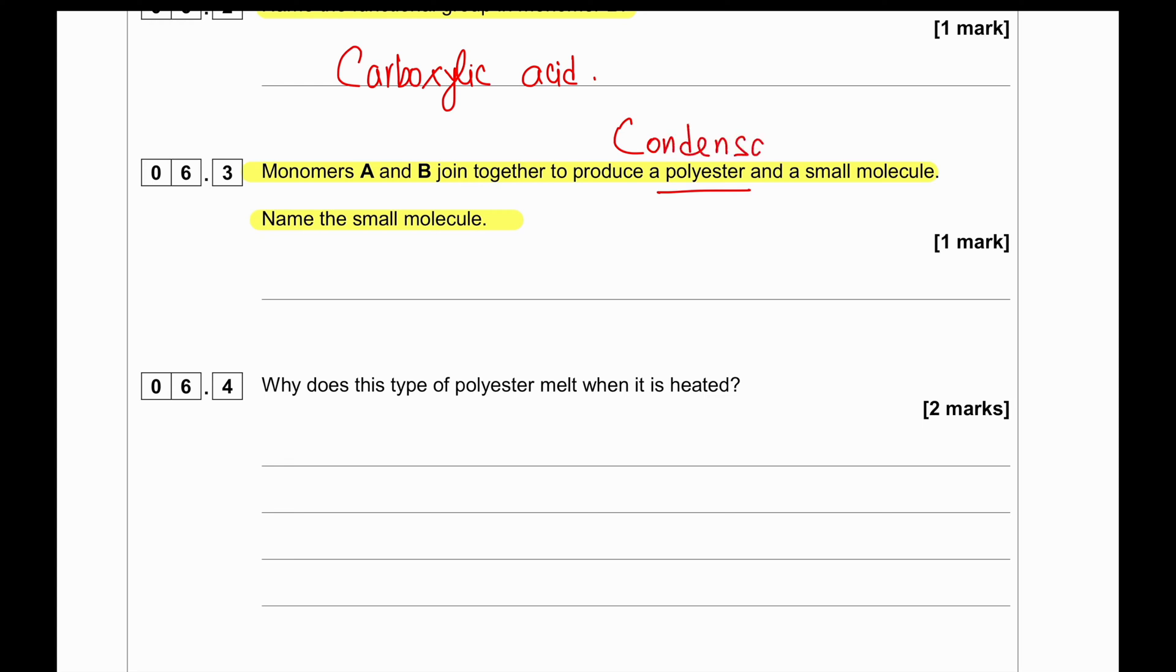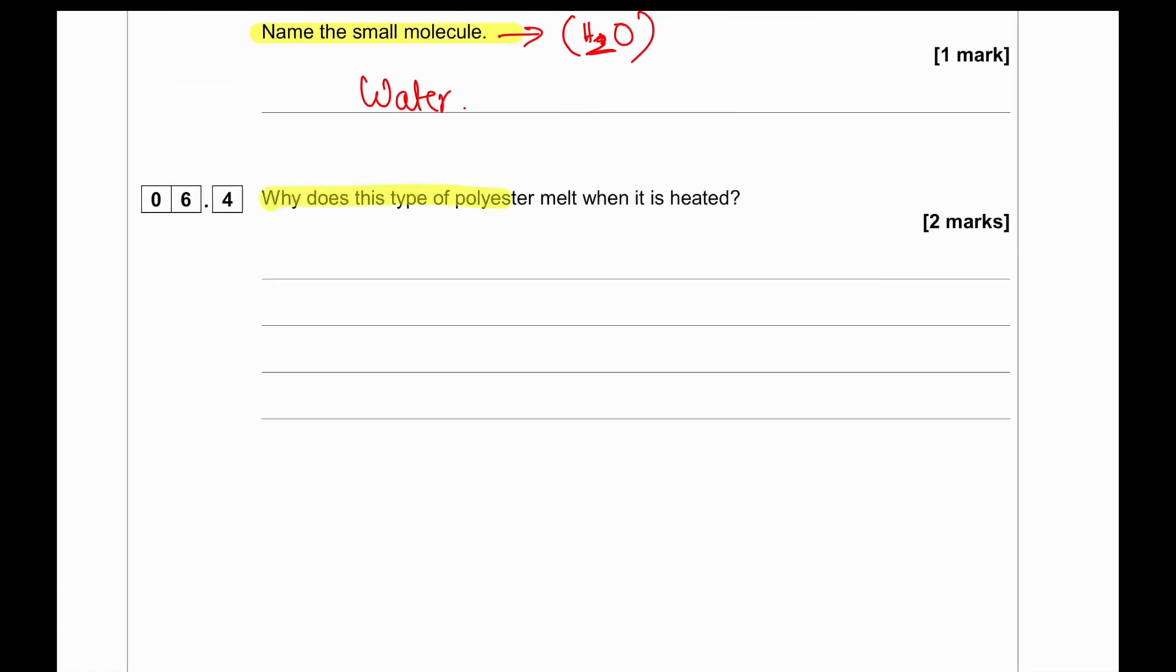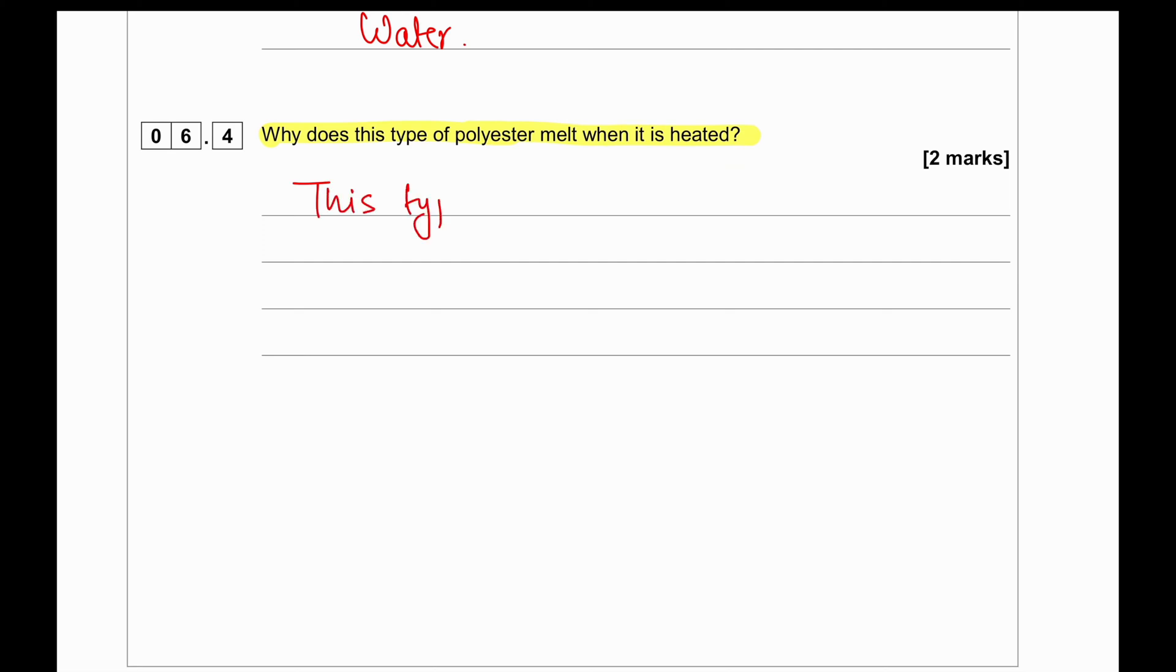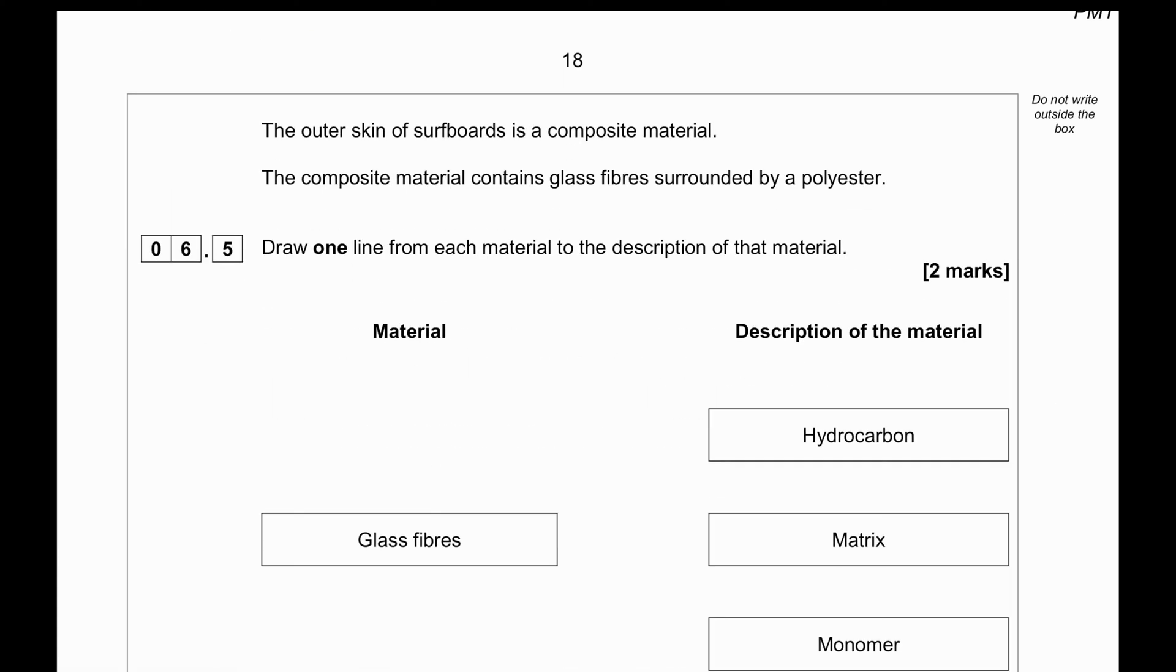Monomers A and B join together to produce a polyester and a small molecule. Whenever a polyester is produced it is a condensation polymerization, and in condensation polymerization we always get a small molecule - in this case the ester produces water. Why does this type of polyester melt when heated? Polyesters such as this one are thermosoftening. Since they're thermosoftening they do not have cross-links within the polymer, so they become softer as temperature rises.